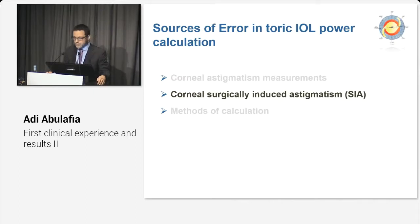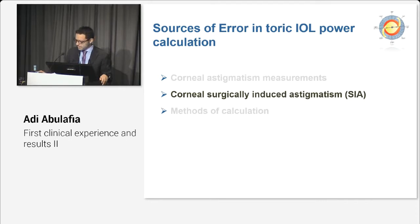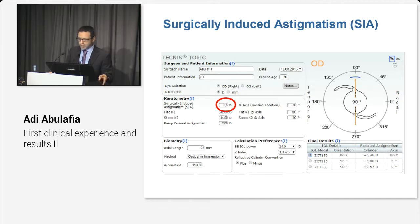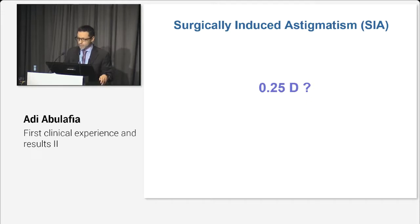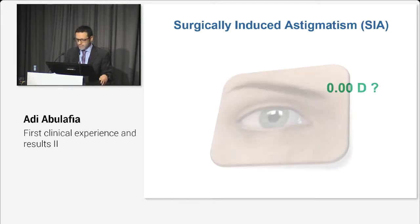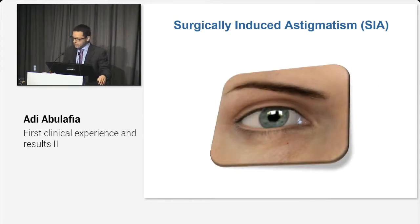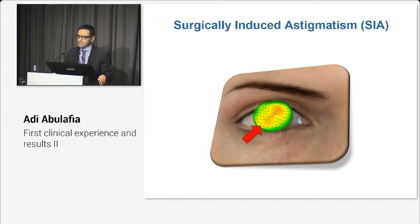The next issue is surgically induced astigmatism. This is a highly controversial topic and unfortunately I'm not going to give you the right answers — rather, I want to share some of my thoughts and dilemmas. Many of us tend to use 0.5 diopters for our SIA just arbitrarily. The question is, is it acceptable? Maybe we should use a quarter of a diopter or even zero. What about incision location — should we use our routine location, or go on-axis as some advise, even if it is ridiculously uncomfortable?